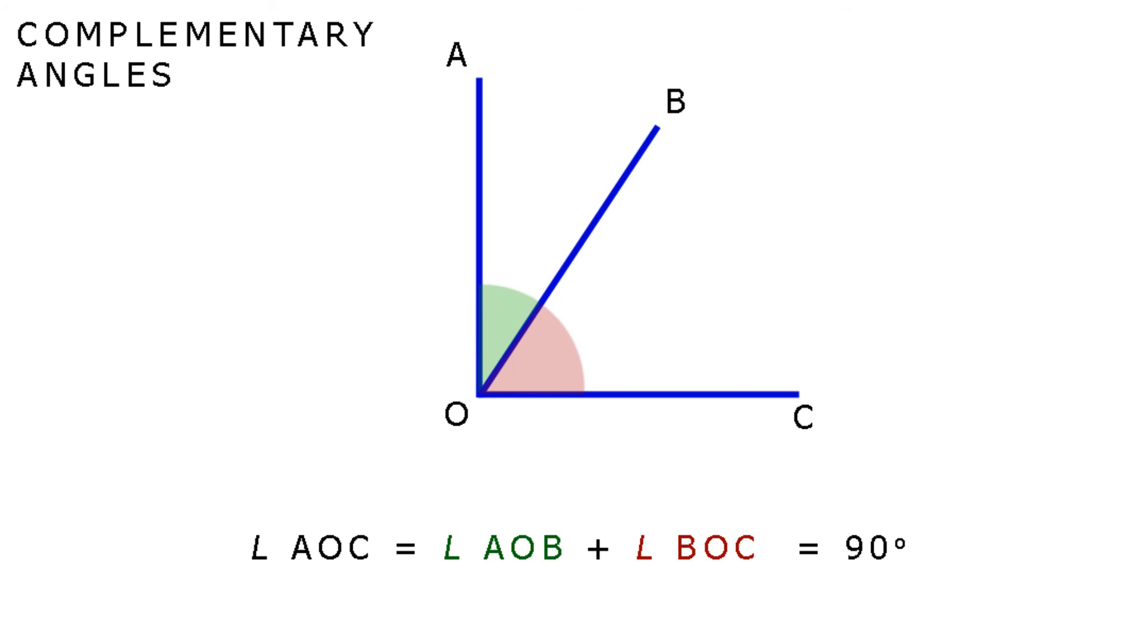Now, there is a way of naming groups of angles around a point by how many degrees they add up to. I want to introduce you to the words complementary and supplementary. Complementary angles are adjacent angles. That means they sit next to each other, like buddies, and they add up to 90 degrees. In the diagram, if angle AOC is a right angle, then we say that angle AOB and angle BOC are complementary to each other. Angle AOC equals angle AOB plus angle BOC, which equals 90 degrees.